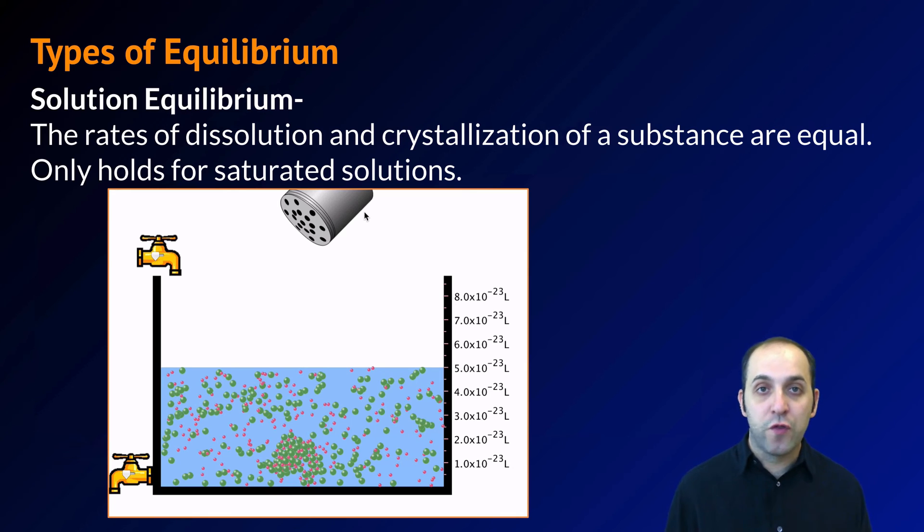The second kind of equilibrium is what's called solution equilibrium. In solution equilibrium, the rate of dissolving is equal to the rate of recrystallization for a substance. This is only true for saturated solutions.